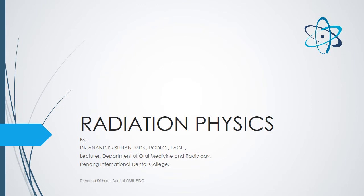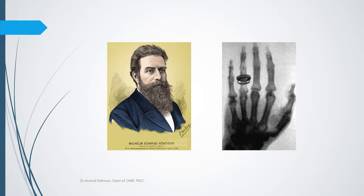Understanding the nature of ionizing radiation such as x-rays is essential. Dr. Willem Conrad Roentgen was the father of radiology. There are controversies, similar to those between Edison and Tesla, because the production of x-rays was based on the discovery of a vacuum tube. The image shown is the first ever radiograph of a human being — it belongs to his wife.